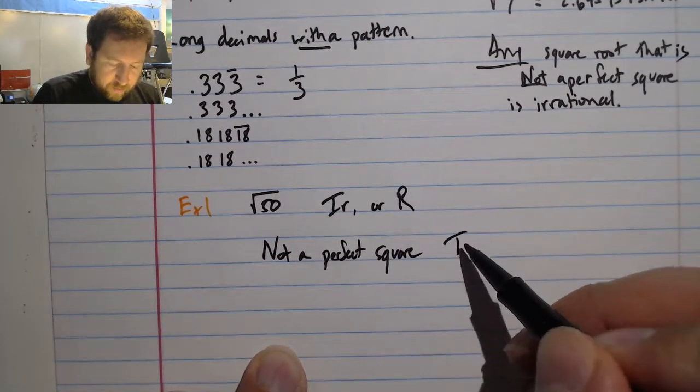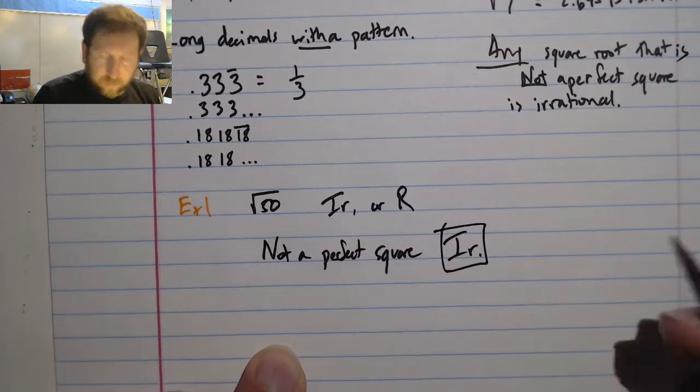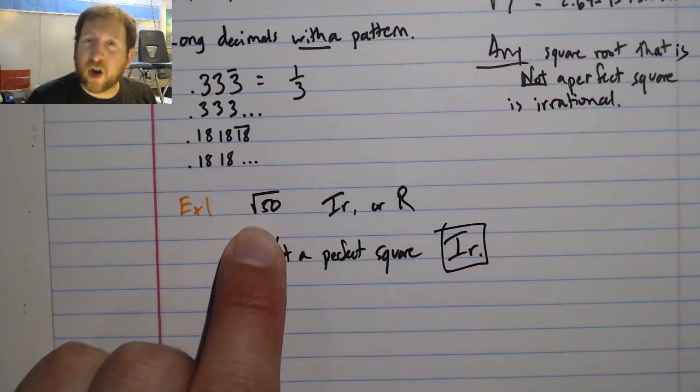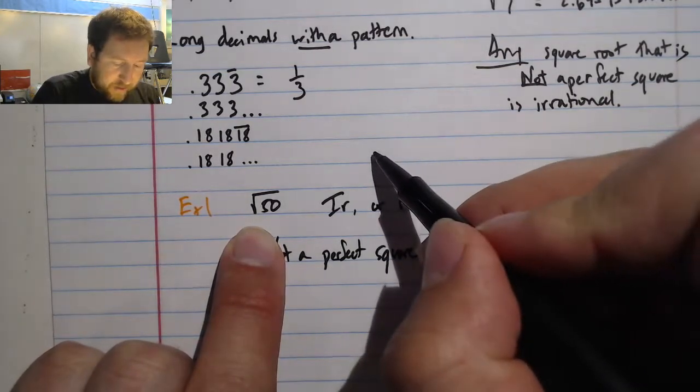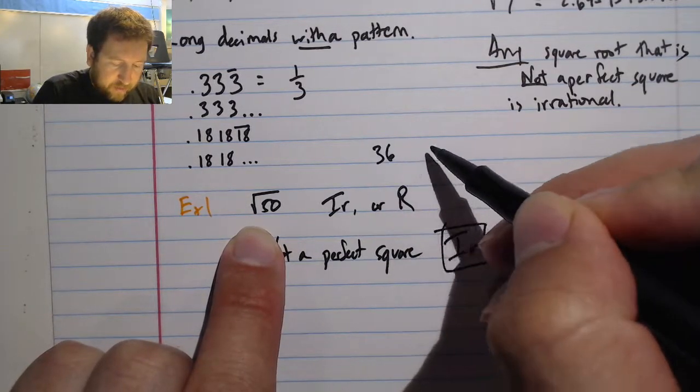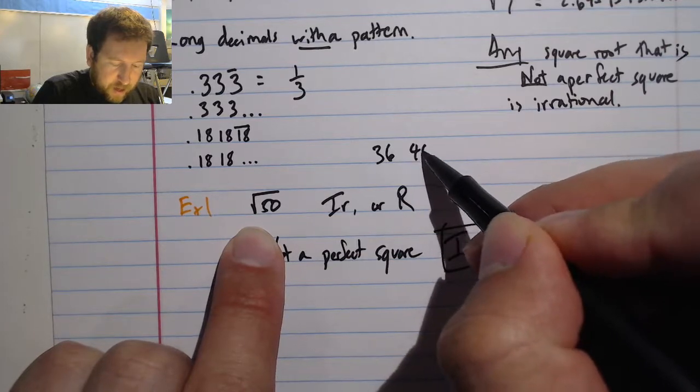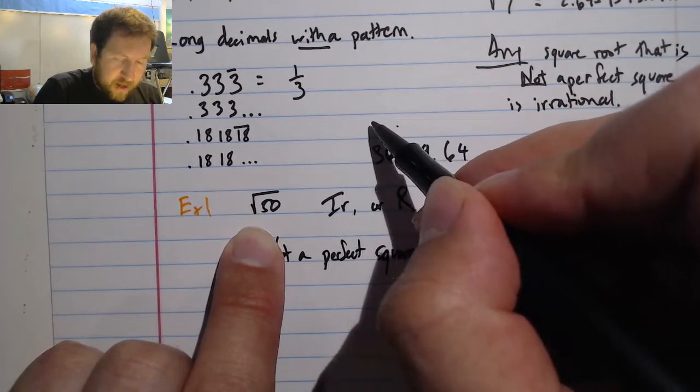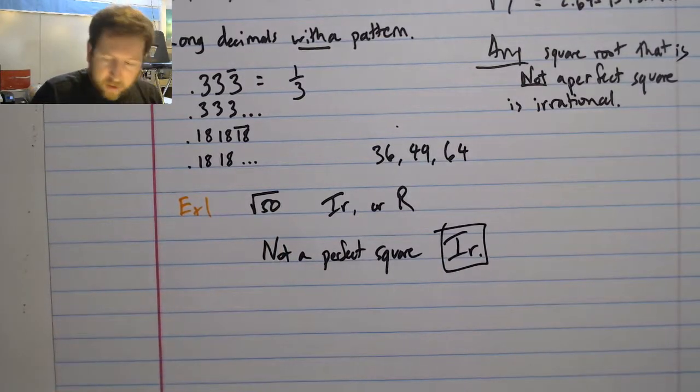No, not a perfect square, so irrational. Remember, my perfect squares are those numbers from that chart we built last time, like 36, 49, 64—all the numbers that are squared by something. Let's take a look at another example.